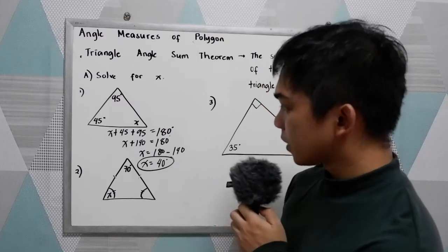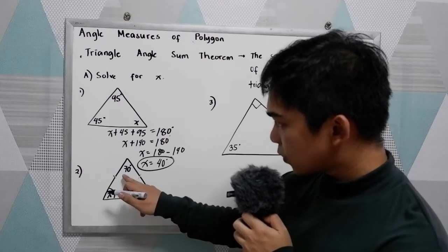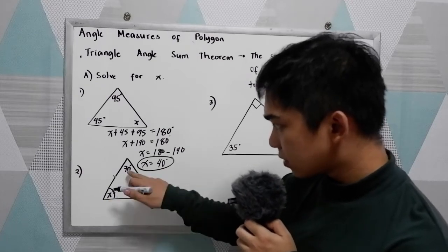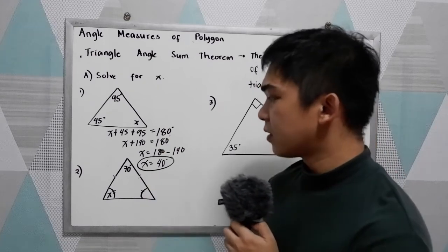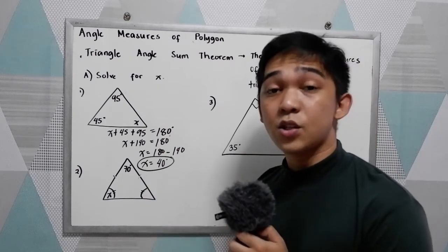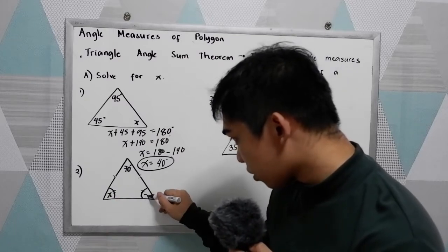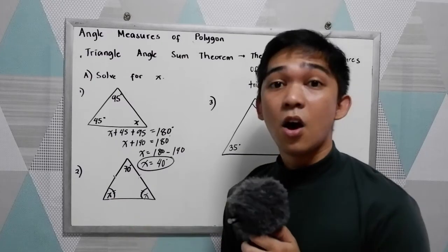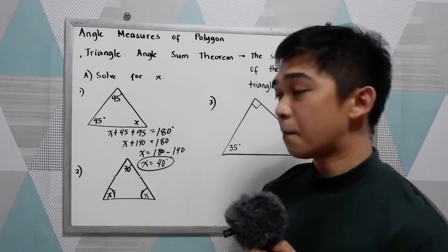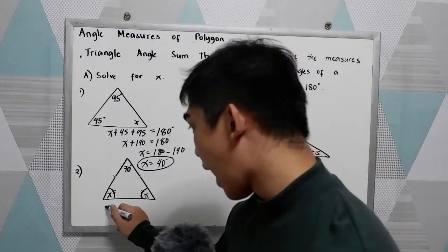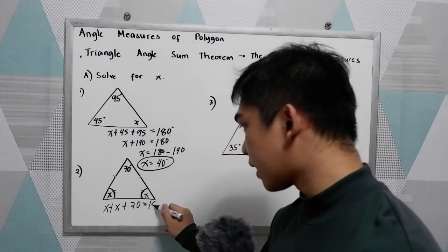Now number two, solve for x. We have the given x, then 70, then an unknown. Study our given — this is an example of an isosceles triangle. If one base angle is x, the other is also x, because the base angles of an isosceles triangle are equal.